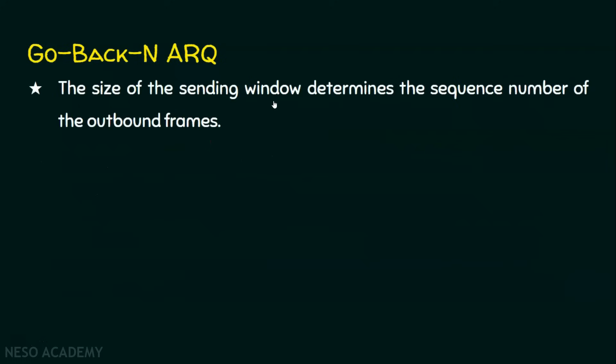The size of the sending window determines the sequence numbers of the outbound frames. Suppose there are 10 frames and the sending window size is 2 — the sequence number will not simply be 1 through 10. The sequence number of the frames is decided by the sending window size N. We will see an example to make this clear.